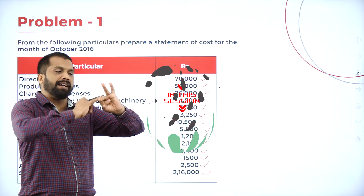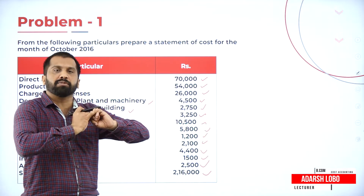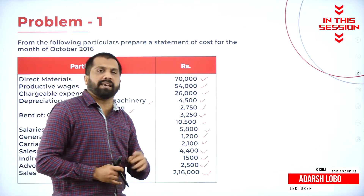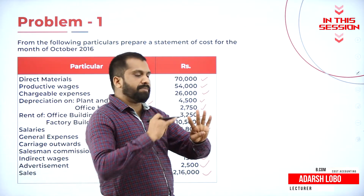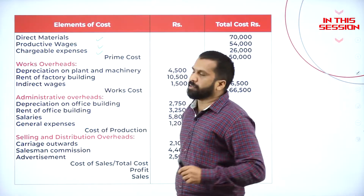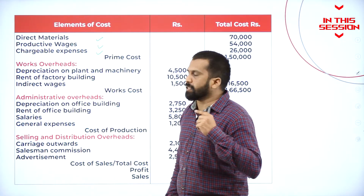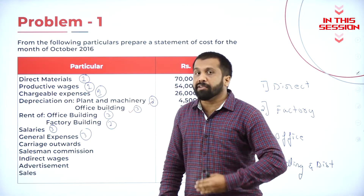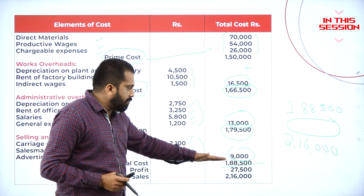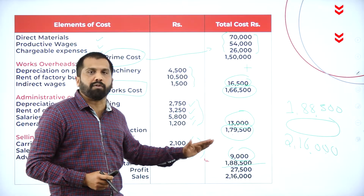Direct, Factory, Office, Selling and Distribution. Before we start, we have to bifurcate for a cost sheet, which comes under 1st, 2nd, 3rd, 4th. Chargeable expenses in the sense, Direct Expenses. What is Carriage Outward? Transportation. From selling price, you minus your total cost, you will get your profit.